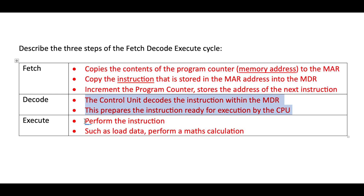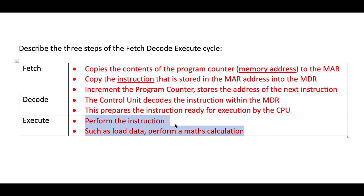In the final execution stage, the CPU performs or runs the instruction. Examples could include loading data into the accumulator, adding two numbers together, or stopping the program.